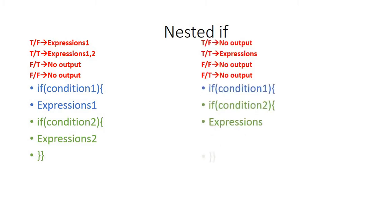The second type of nested if statements are those in which the first if doesn't have any expressions. In this case the first if condition has no expressions while the second if is nested inside the first condition. So we have only expressions inside the second if condition. These expressions depend on both conditions. If both conditions are true these expressions will be executed. If the outer condition is false, or the inner condition is false, these expressions will not be executed.